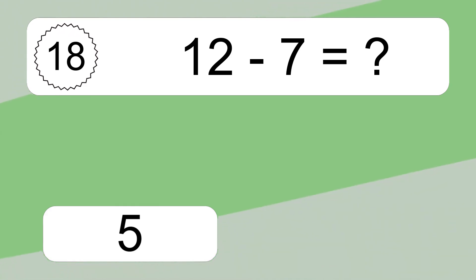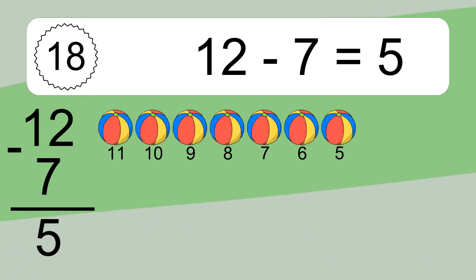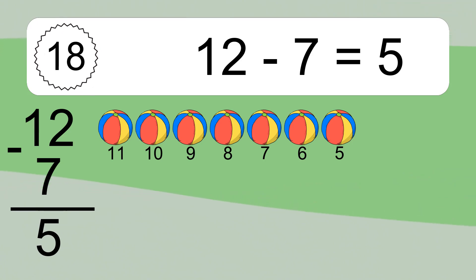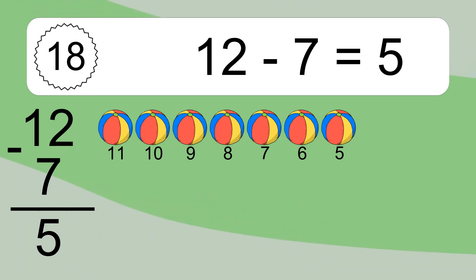12 minus 7 equals what? 12 minus 7 equals 5. Let's count it: 11, 10, 9, 8, 7, 6, 5.